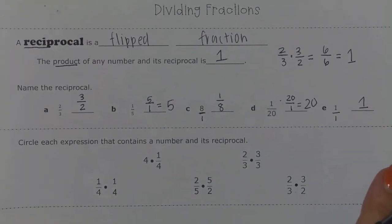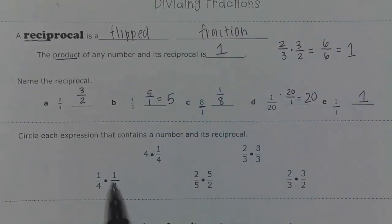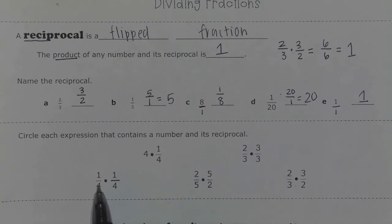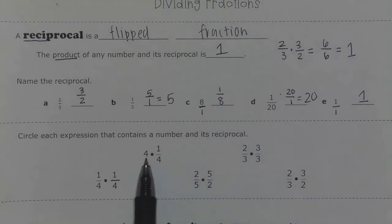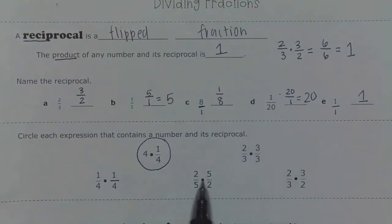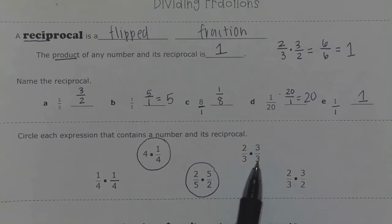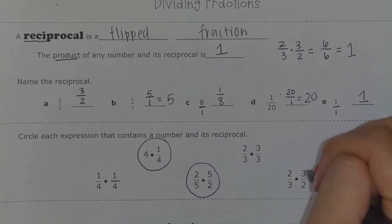The example says to circle each expression that contains a number and its reciprocal. The very first one — I have one-fourth, and the reciprocal of one-fourth would be four, and that's not what I have there, so I can't circle that one. I have the number four — its reciprocal would be one-fourth. I have two-fifths — its reciprocal would be five-halves. Two-thirds — the reciprocal would be three-halves, but this says three-thirds, so I can't circle that one. But luckily, two-thirds times three-halves works.